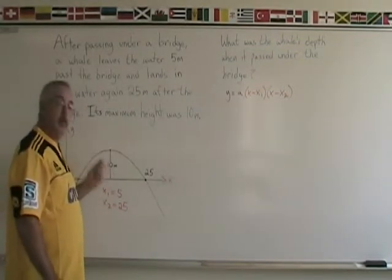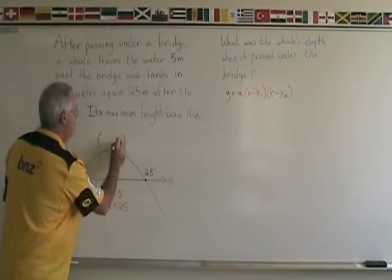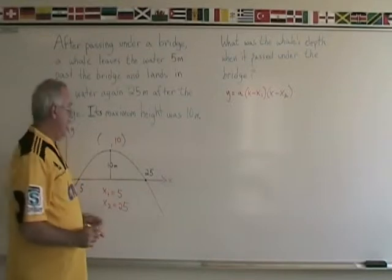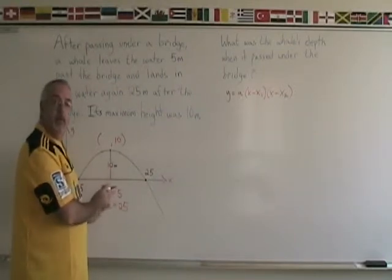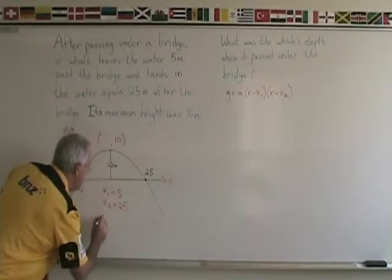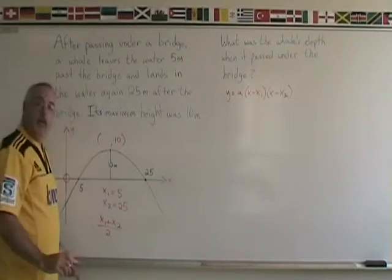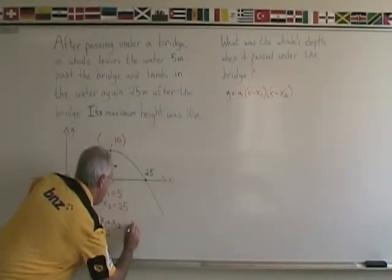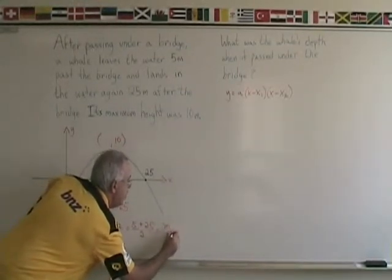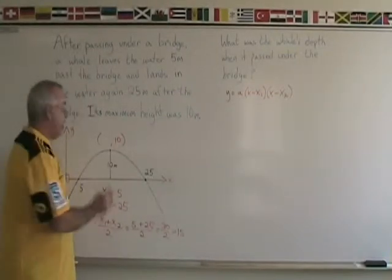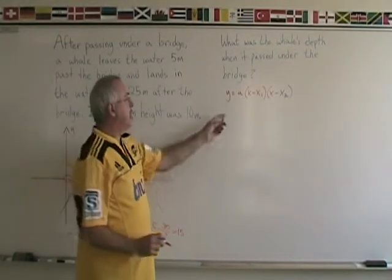My other point will be the vertex. We can see that the vertex has a y-coordinate of 10, but we have to figure out its x-coordinate. We will find the x-coordinate by finding the midpoint between the two zeros: x1 plus x2 over 2, which means 5 plus 25 over 2, which is 30 over 2, or 15. The x-coordinate of my vertex is 15, and that is the x-coordinate of the other point I need.